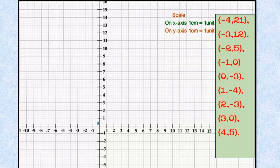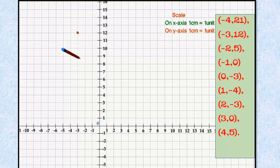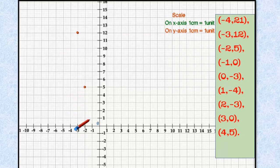Minus 4 comma 21 is not available in the graph. Plotting minus 3 comma 12, minus 2 comma 5, minus 1 comma 0 — it lies on the x-axis.